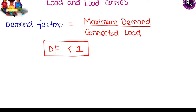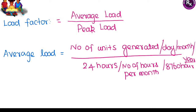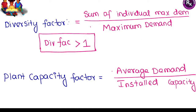Other important factors for effective power transmission: demand factor is the ratio between maximum demand and connected load, and should always be less than one. Load factor is the ratio between average load and peak load. Average load is total units generated divided by the time period — 24 hours per day, total hours per month, or approximately 8760 hours per year depending on the period considered.